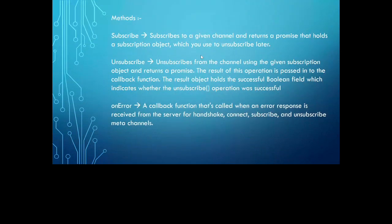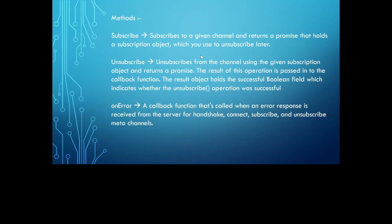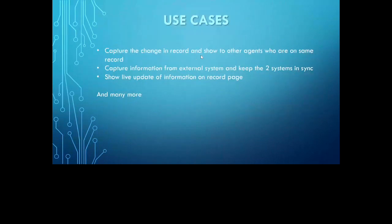EMP API comes with three particular methods. One is subscribe, where you subscribe to a streaming API channel so that whenever any message comes in you will receive it. Next is unsubscribe — if you don't want to receive those messages you use unsubscribe. Third is onError, so if any error happens during the handshake or any issue occurs, onError will capture those issues.